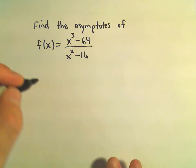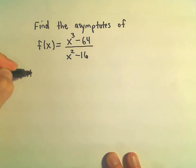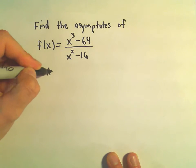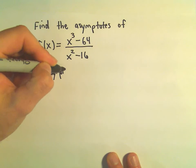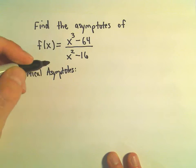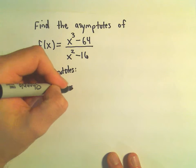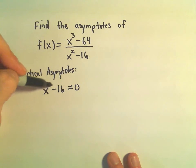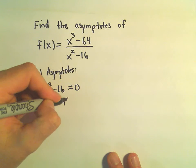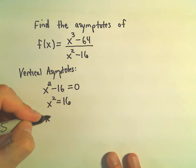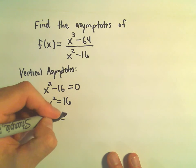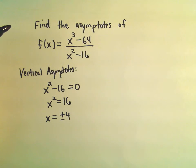Again, a couple different ways to do these, at least for the vertical asymptotes. The first thing I'm going to do, usually the way I do them, is I figure out what makes the denominator equal 0. So I just take the denominator, set it equal to 0. I can add 16 to both sides, take the square root of both sides, and that would give me x equals positive and negative 4.